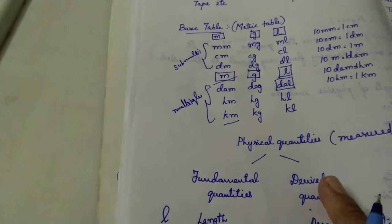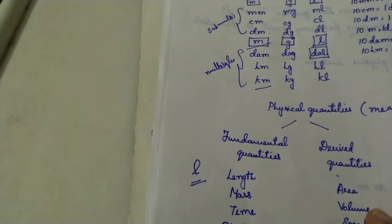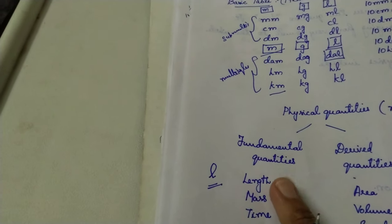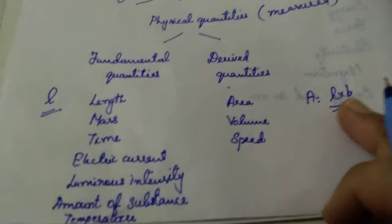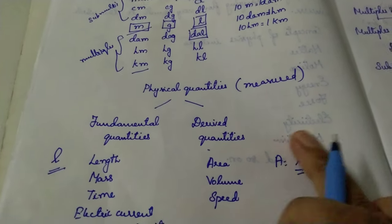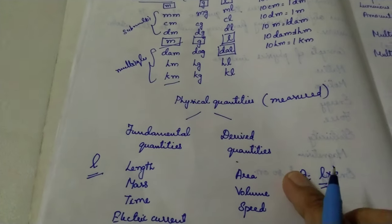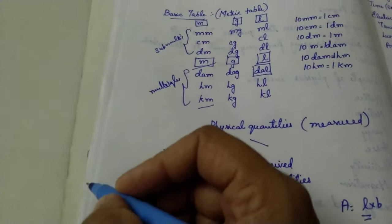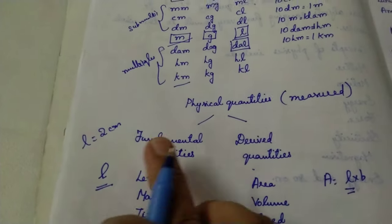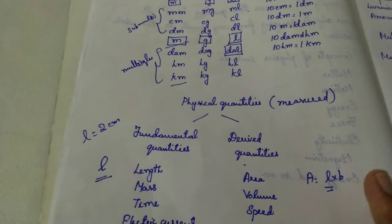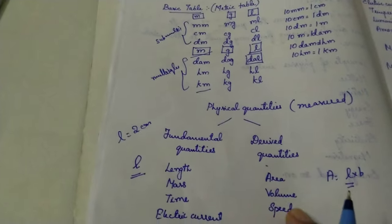I will explain with an example so you understand better. Some fundamental quantities are length, mass, and time. Derived quantities are area, volume, and speed. Length is a unique quantity — it cannot be obtained from any other quantities. Whereas a derived quantity like area: the area of a rectangle is length into breadth. When we want area to be calculated, we depend on the fundamental quantity length. So they are called derived quantities. For example, if length equals 2 cm, when you want the area to be calculated you use this length value. Hence they are called derived quantities, and length is called a fundamental quantity.